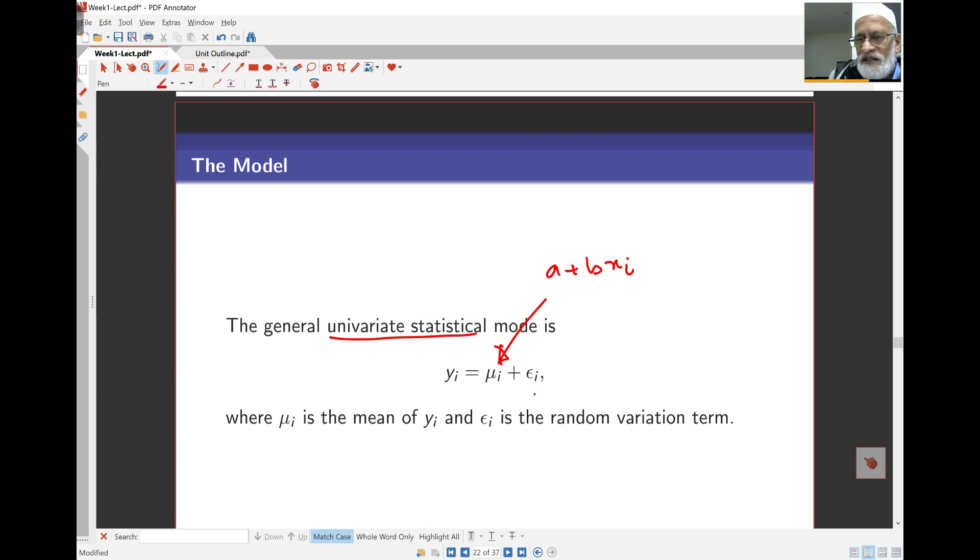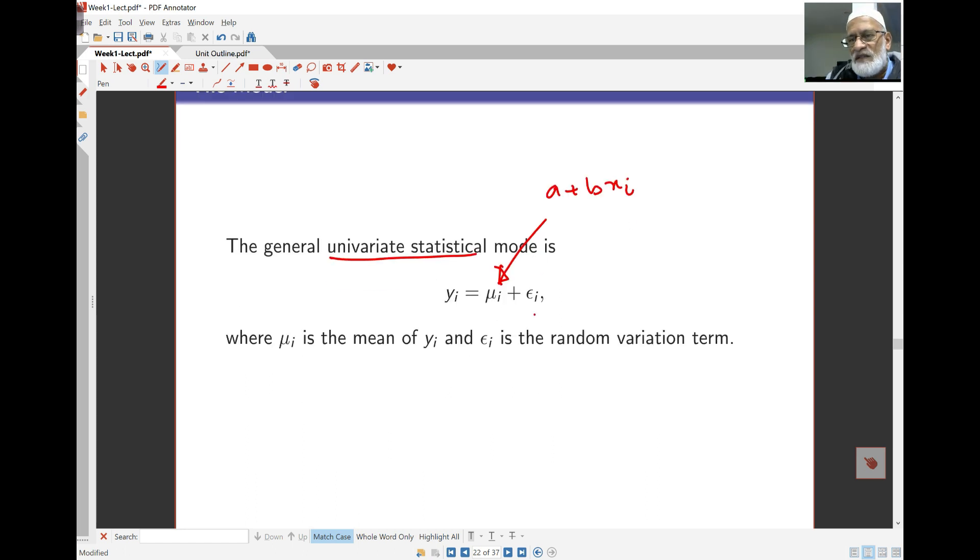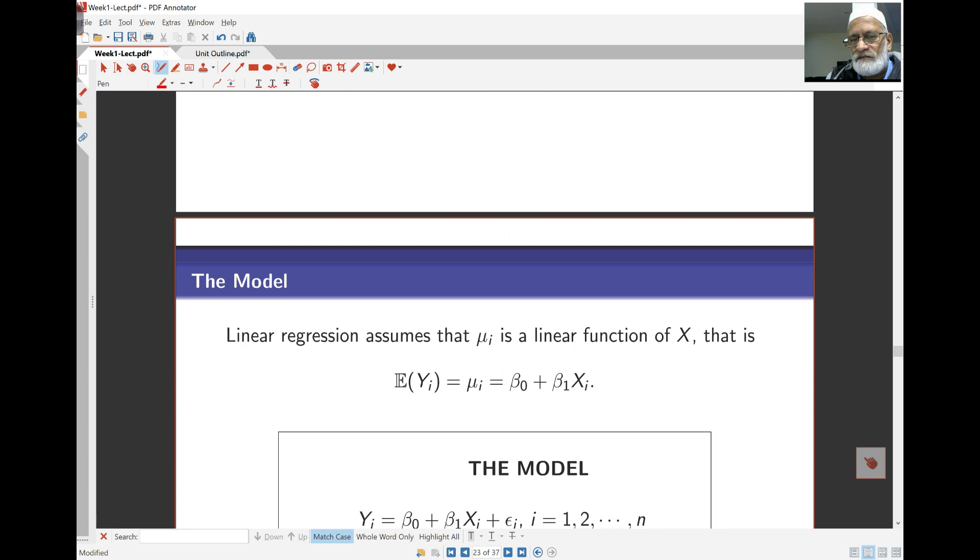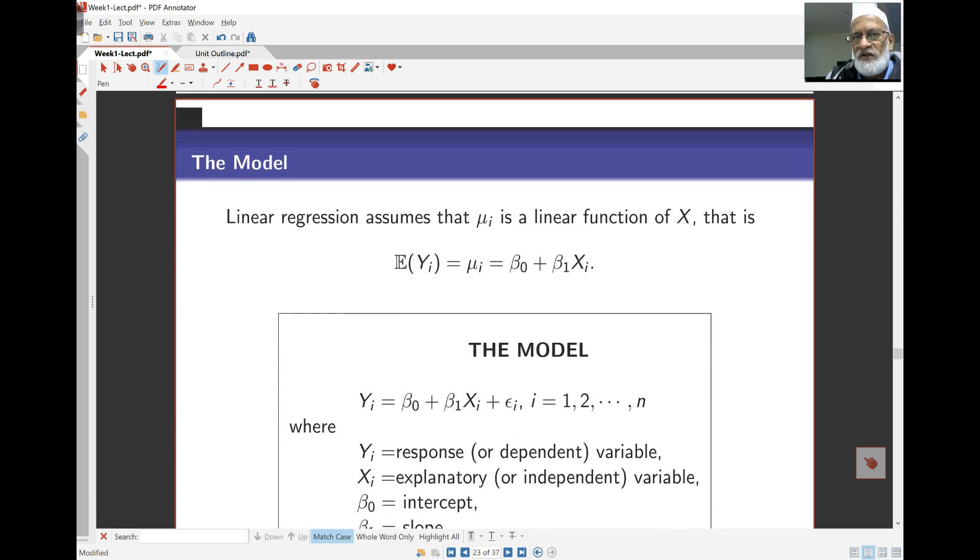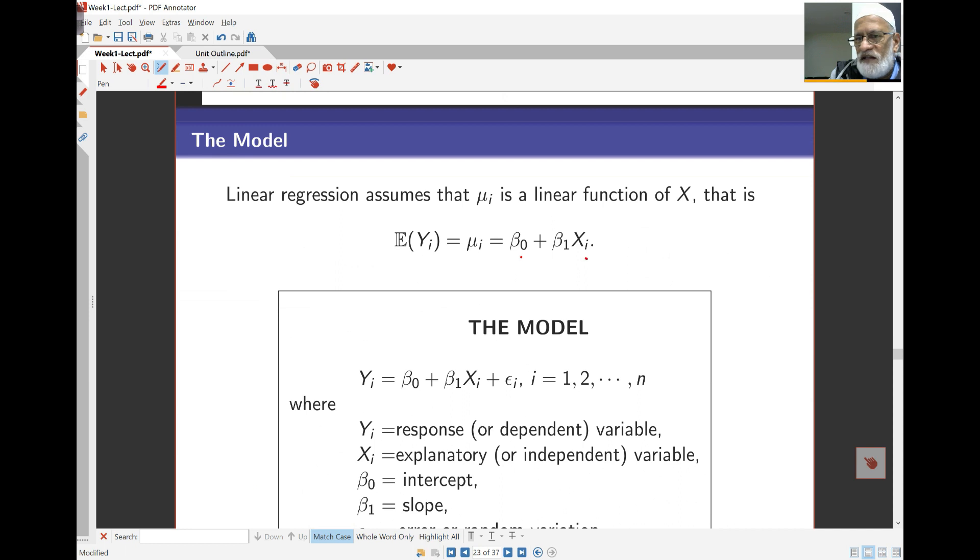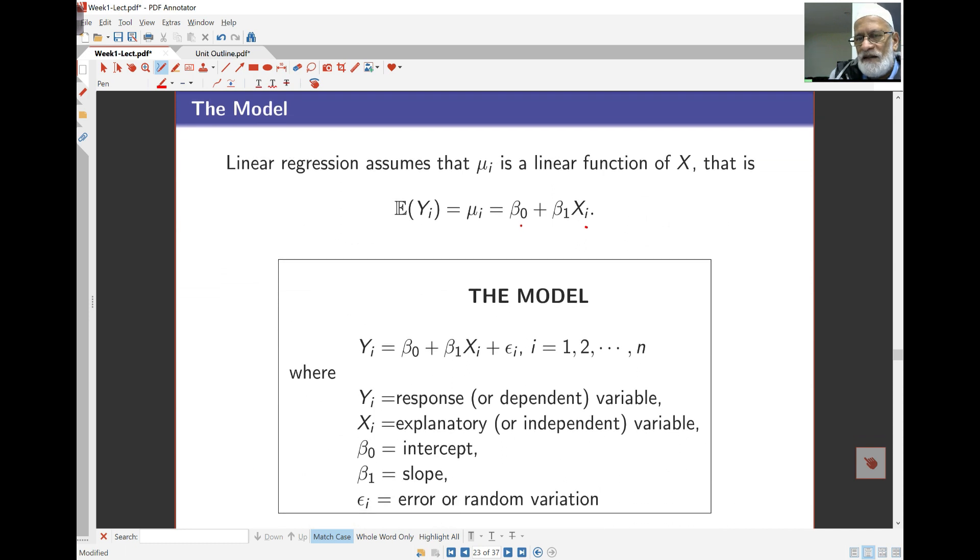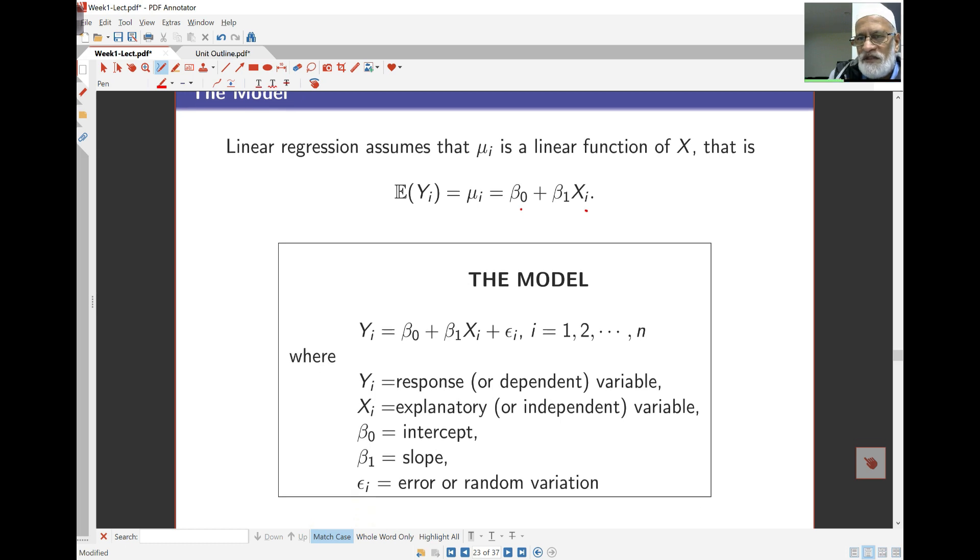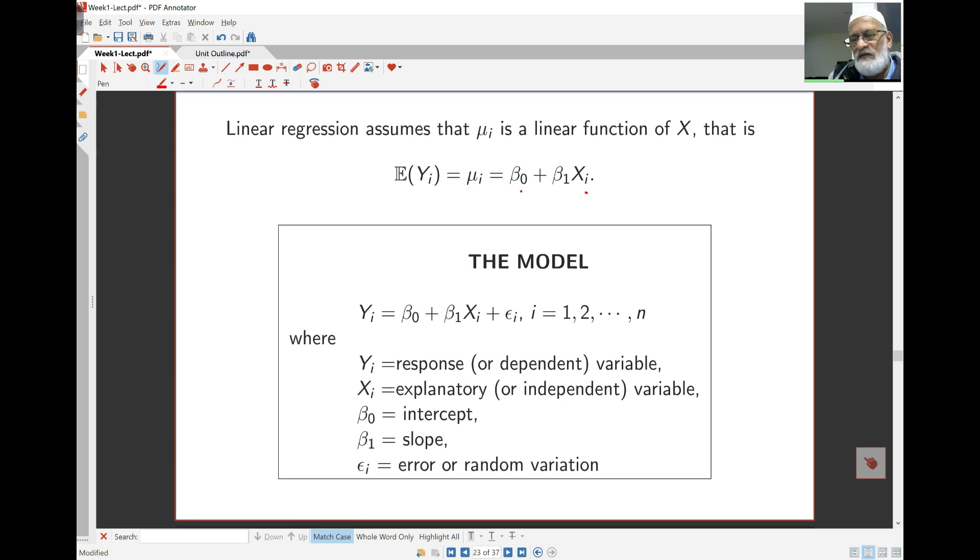In some other models, I might select the mean differently. But in regression, the mean is simply a straight line relationship with respect to xi. Linear regression assumes that mui, or the mean here, is a linear function of xi. That is, the mean value of yi is beta 0 plus beta 1 xi. Straight line equation here. Yi is the response. Xi is the explanatory or independent variable. Beta 0 is the intercept term. Beta 1 is the slope. And epsilon is the error or random variation.